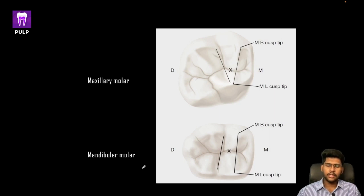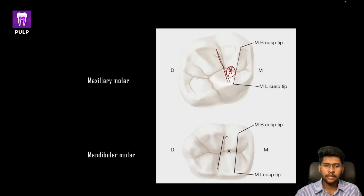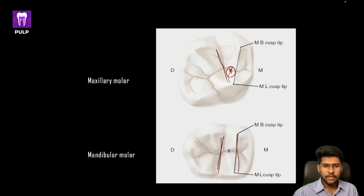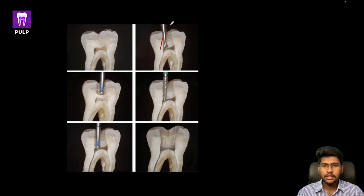Where exactly to start: you use a round burr. For a maxillary molar, you take the mesiobuccal cusp tip, the mesiolingual cusp tip, and a line approximating the buccal groove — somewhere between these lines is point X. For mandibular molars, lines along the buccal and lingual grooves and the cusp tips define point X. You start preparing at this point X, going deep with the round burr until you feel a free fall into the pulp chamber. Once you feel this, take a DG-16 explorer to search for canals, and then shift to the safe-end tapered or Endo-G burr.